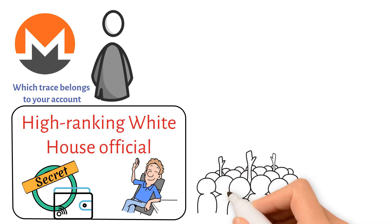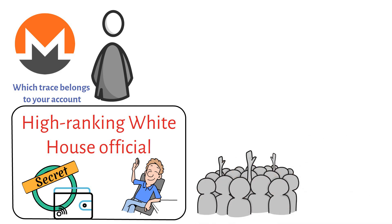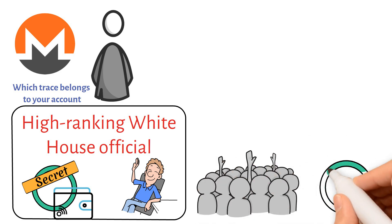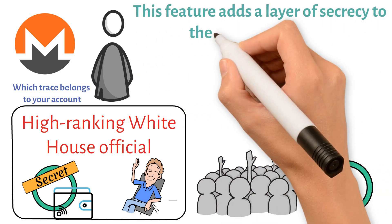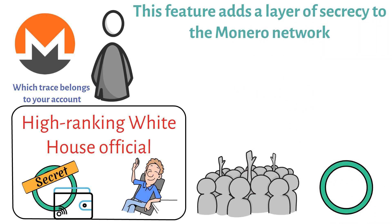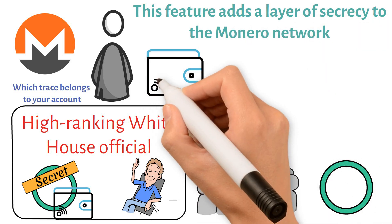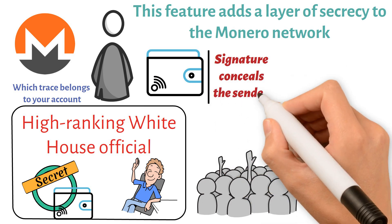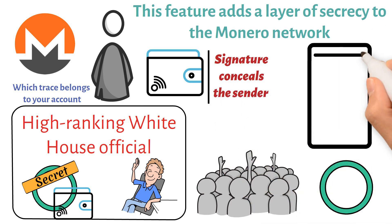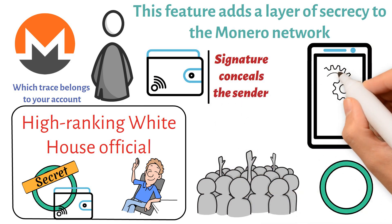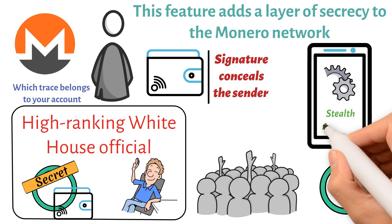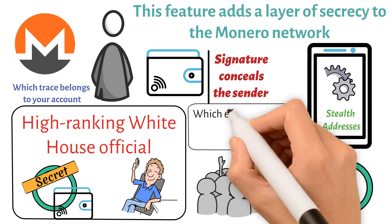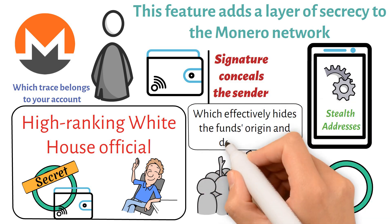Multilayer linked spontaneous anonymous group signature (MLSAG) is an enhanced variant of ring signatures. This feature adds a layer of secrecy to the Monero network and conceals the transaction value, while the signature conceals the sender. All Monero senders automatically create new addresses each time they start a new transaction by using what are known as stealth addresses, which effectively hides the fund's origin and destination.